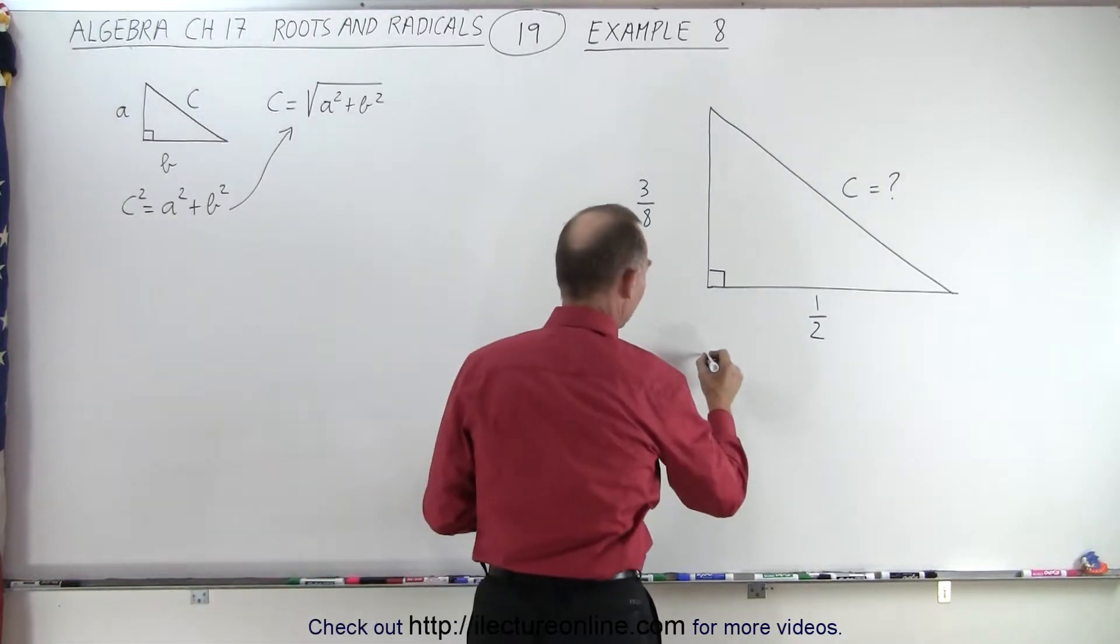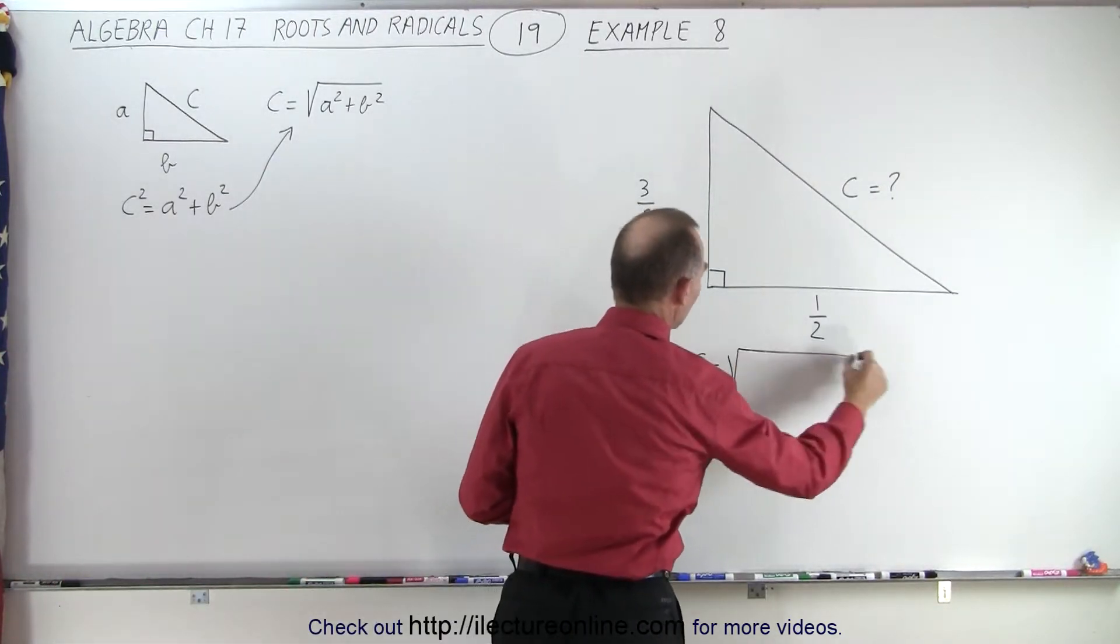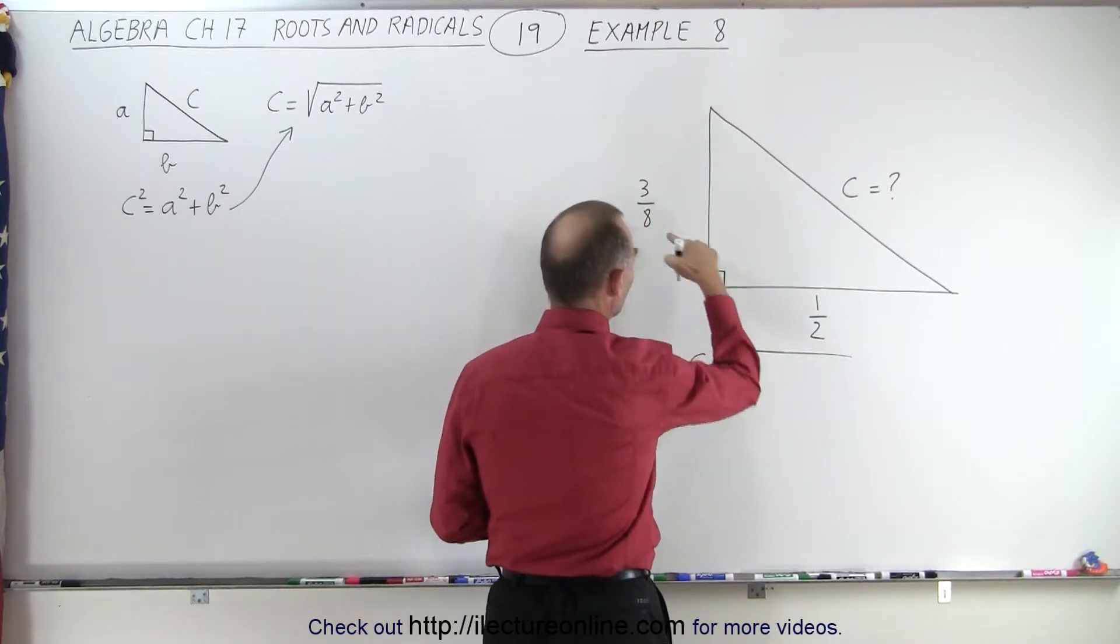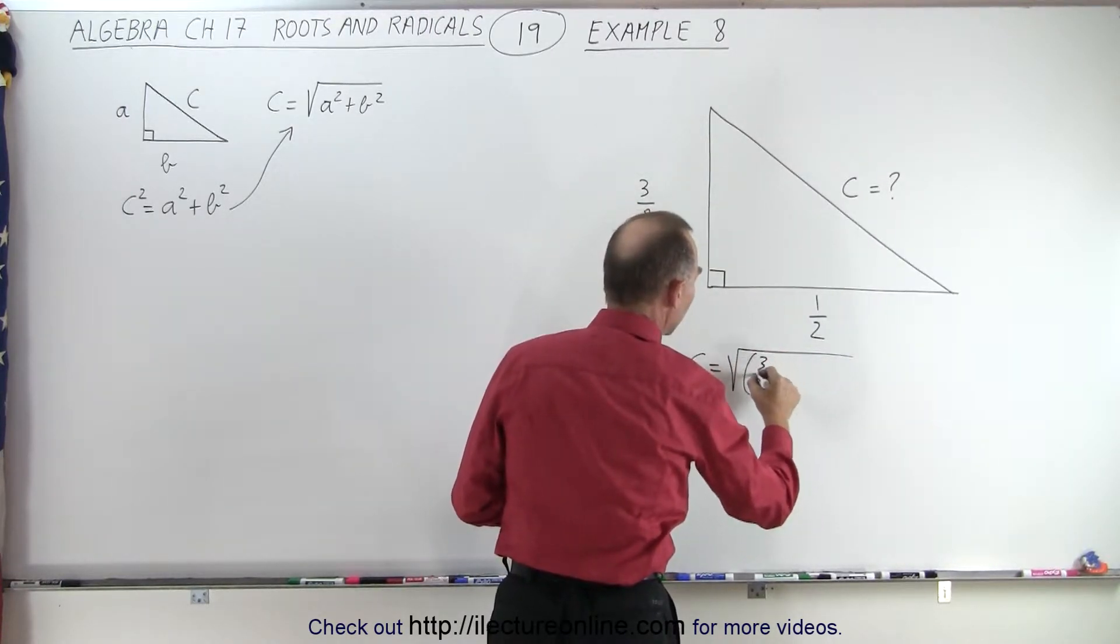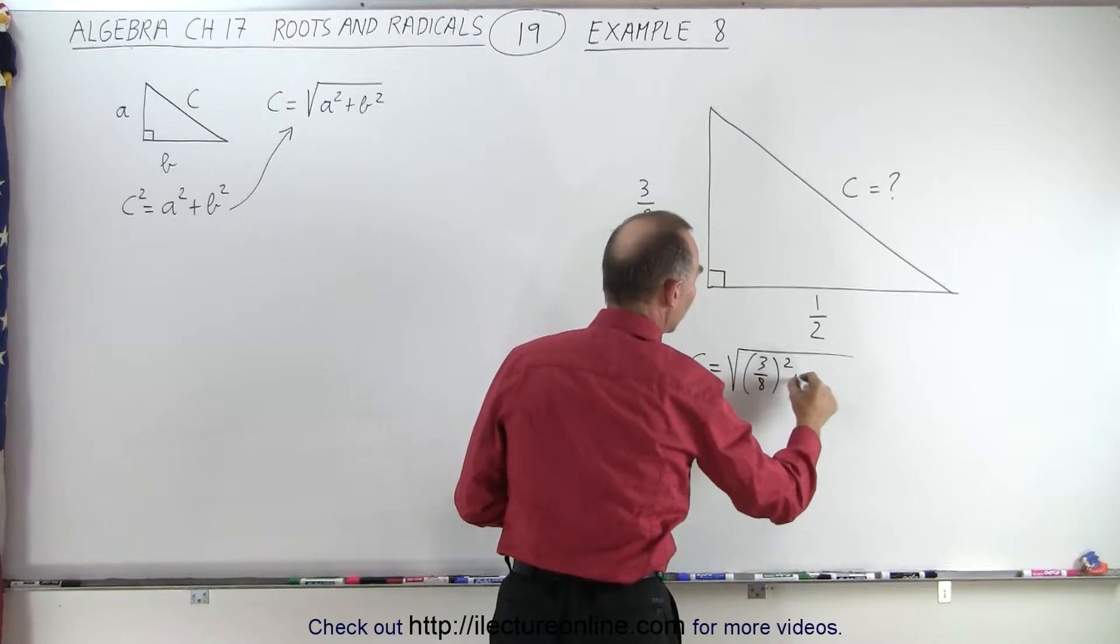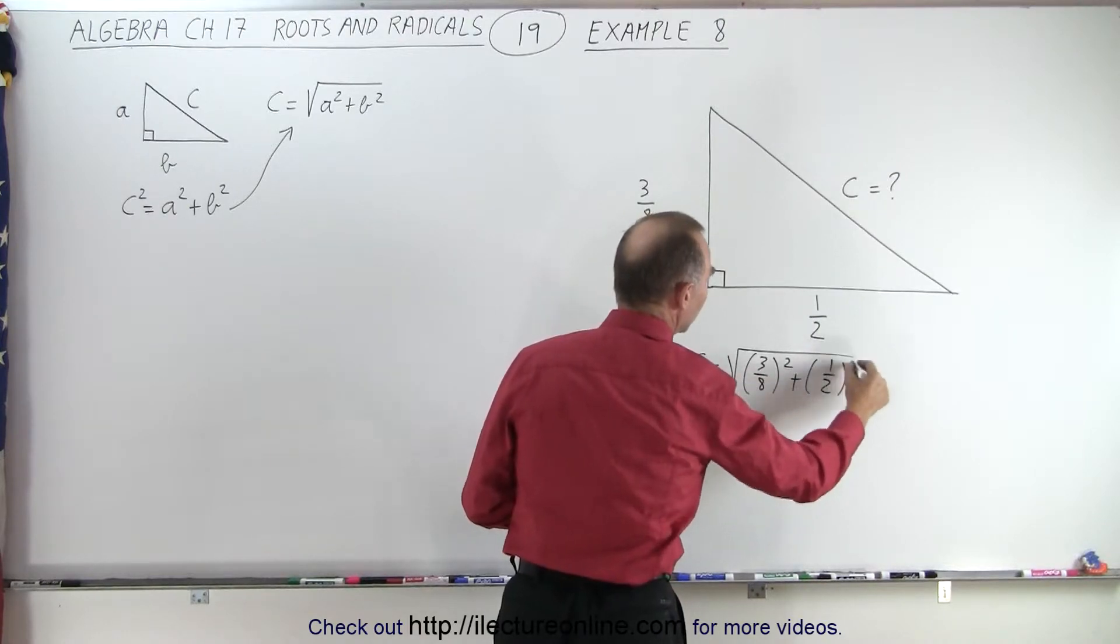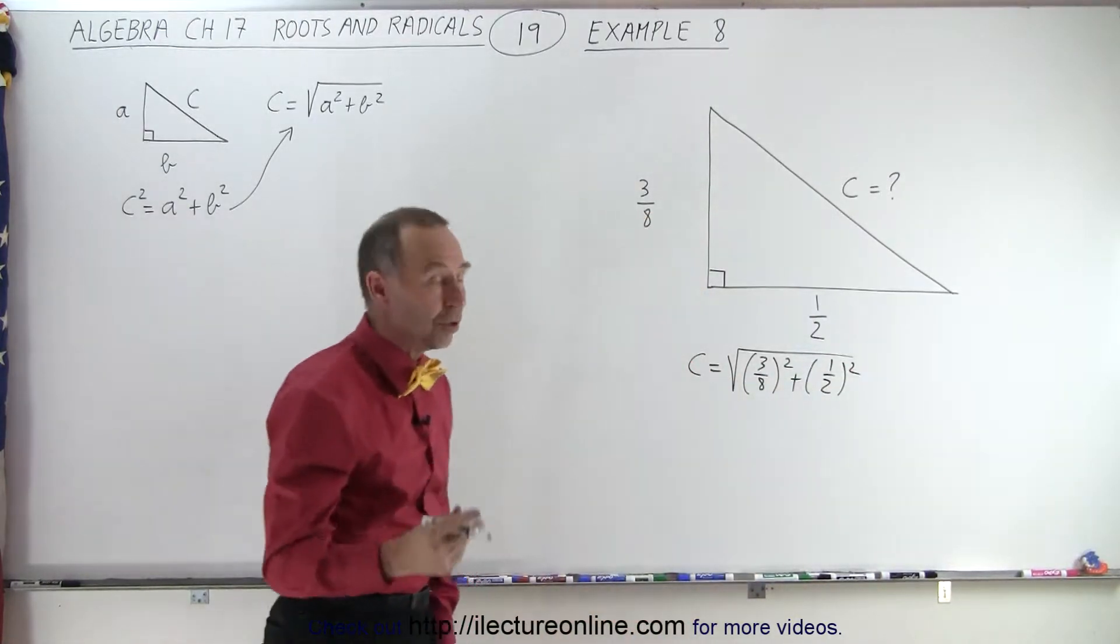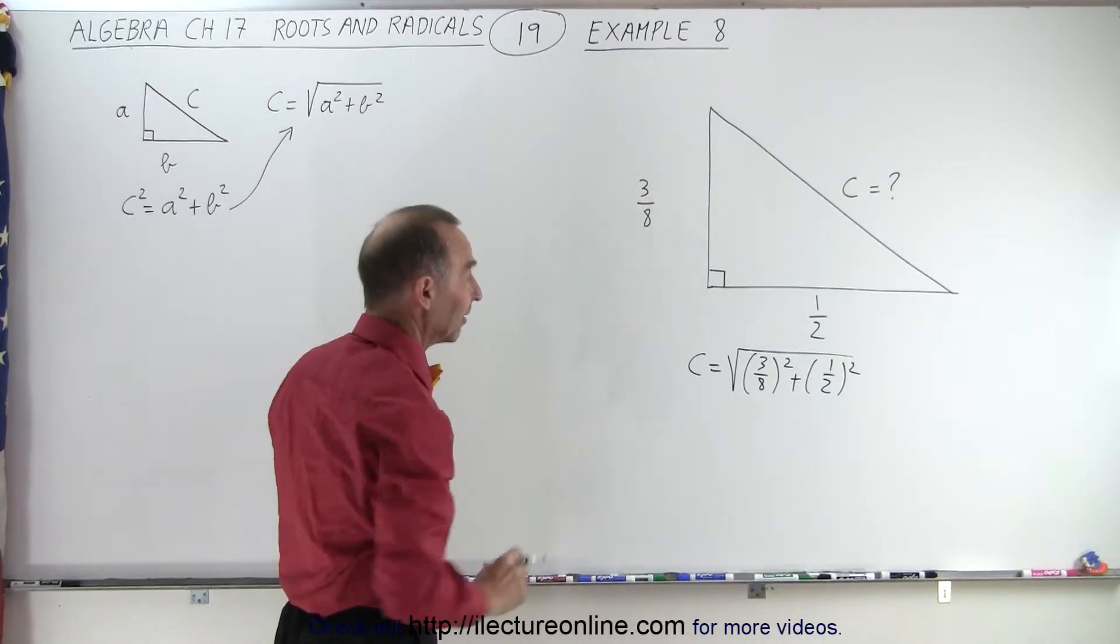We can then say that c is equal to the square root of the sum of the squares of the two sides, which would be 3 eighths quantity squared plus 1 half quantity squared. So what we need to do now is simplify what we have inside the radical.